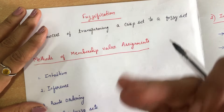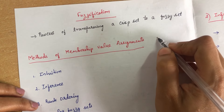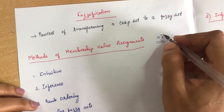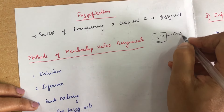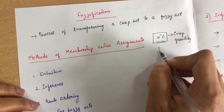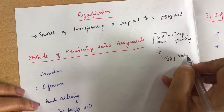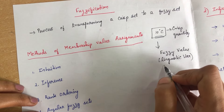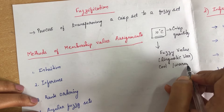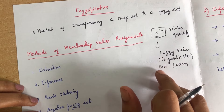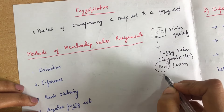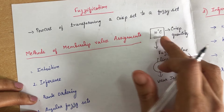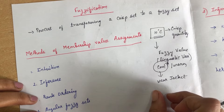For example, if a person says the current temperature is 10 degrees Celsius, we do not know whether we need to wear a jacket or not. This 10 degrees Celsius is a crisp quantity. We need to convert this crisp quantity into a fuzzy value — a linguistic variable — and classify whether it is cool or warm. If it is cool, we need to wear a jacket. Fuzzification converts accurate values into fuzzy values, making decision-making easier.